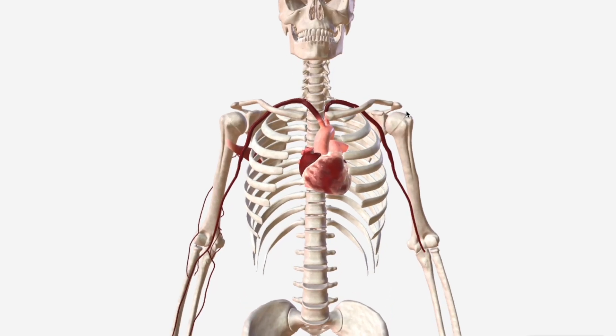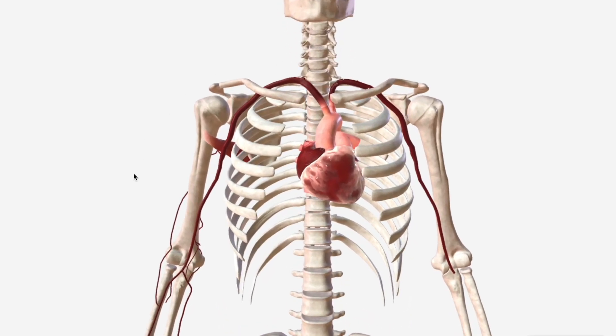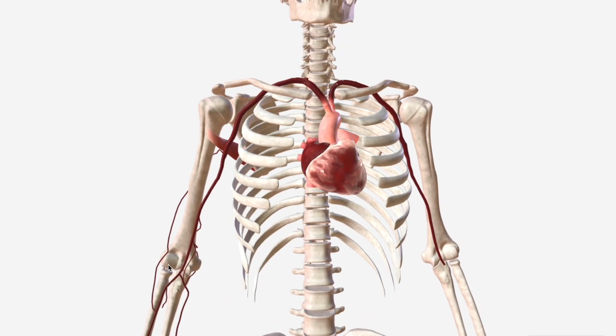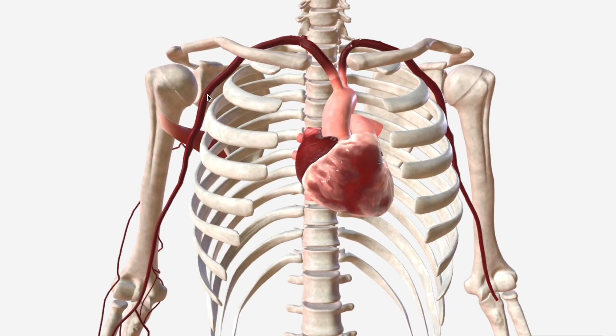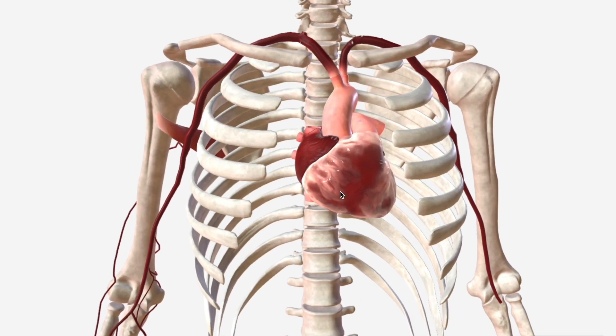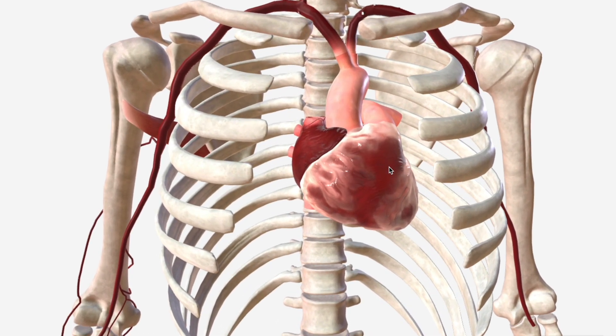The brachial artery is one of the core channels for arterial blood to the upper limb. We're going to start off this video by going back to where we started, at the heart.